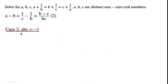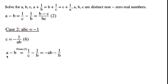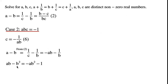Case two: ABC equals minus 1. By rearranging, we can write C equals minus 1 over AB. From equation 2, A minus B equals 1 over C minus 1 over B. By rearranging equation 6, we can write 1 over C as minus AB. To remove the fractional term, we multiply both sides of the equation by B.